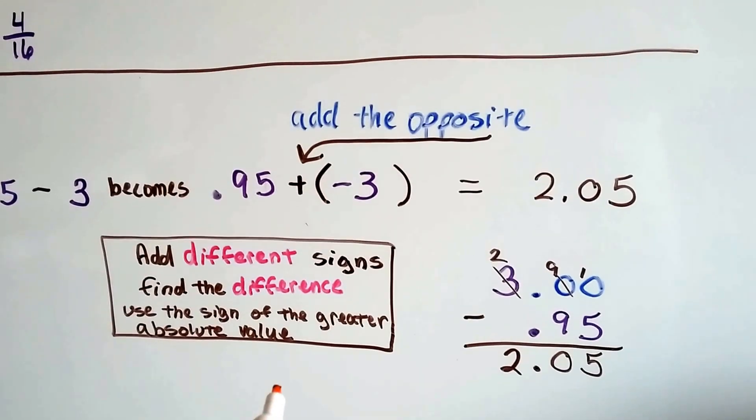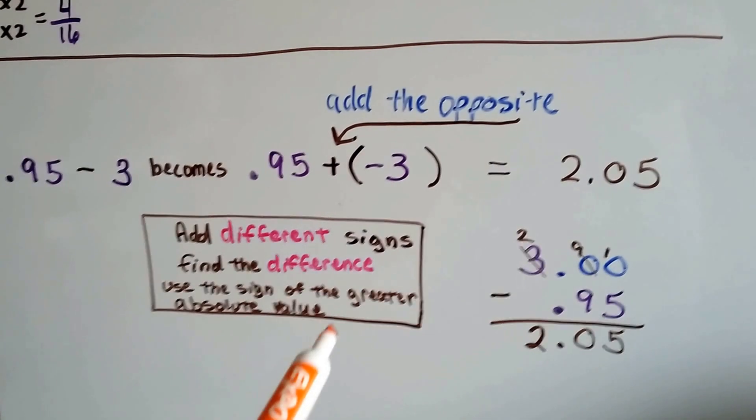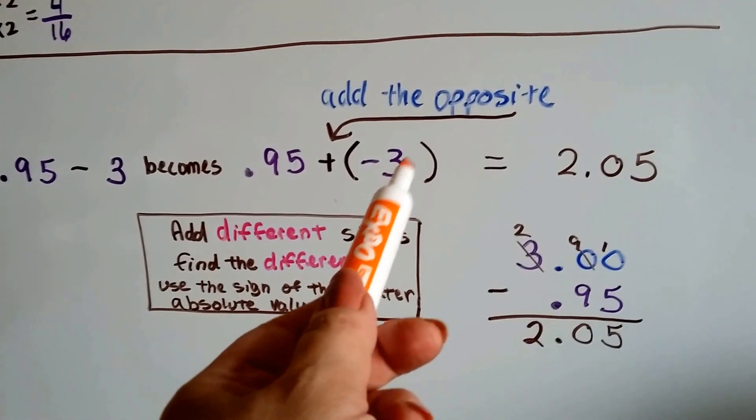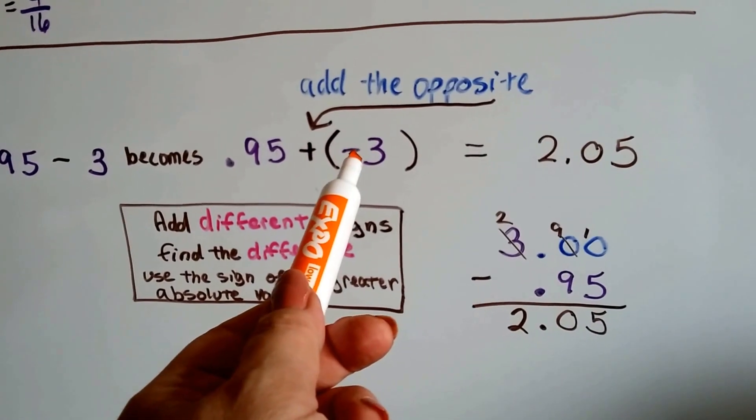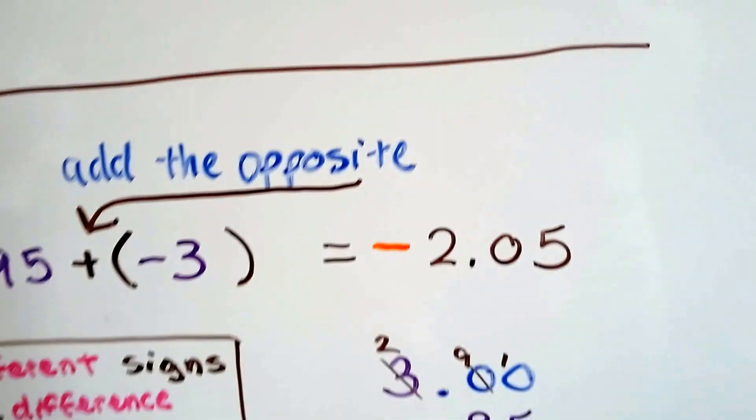That's the difference between them. And we take the sign of the larger absolute value, the one that's farther from zero. This isn't even a 1. This is 95 one-hundredths. And this is three whole. So this is going to be the bigger one. So it's a negative. So we get negative 2.05.